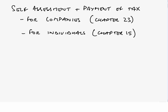We at last come to our final session together in relation to our F6 taxation studies. What we've done is save the most boring until last, and that's the self-assessment and payment of tax by both companies and individuals, dealt with in chapter 23 for companies and chapter 15 for individuals.